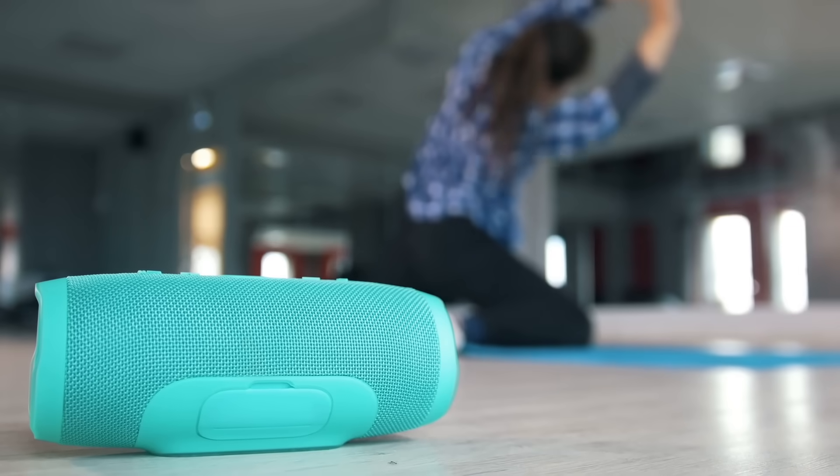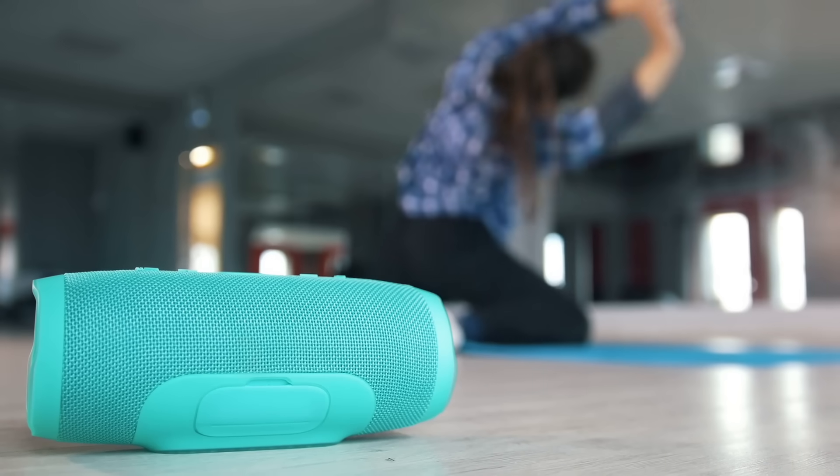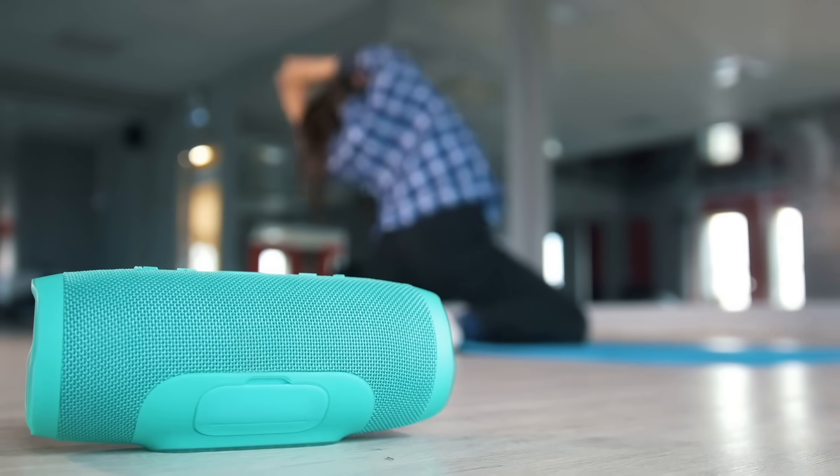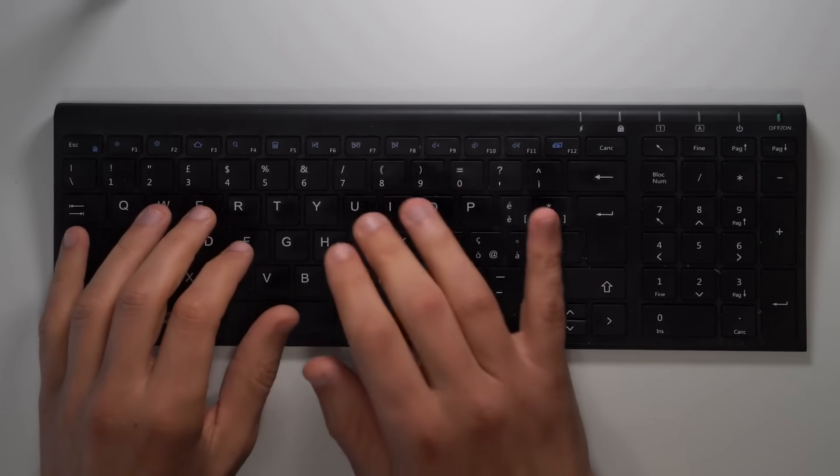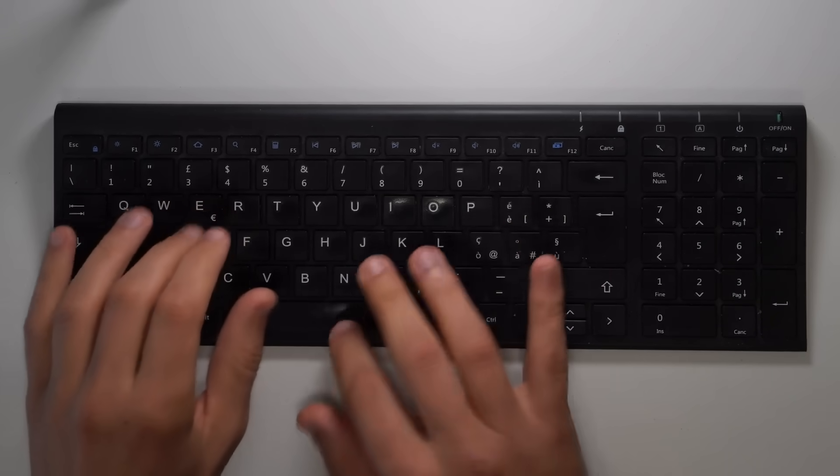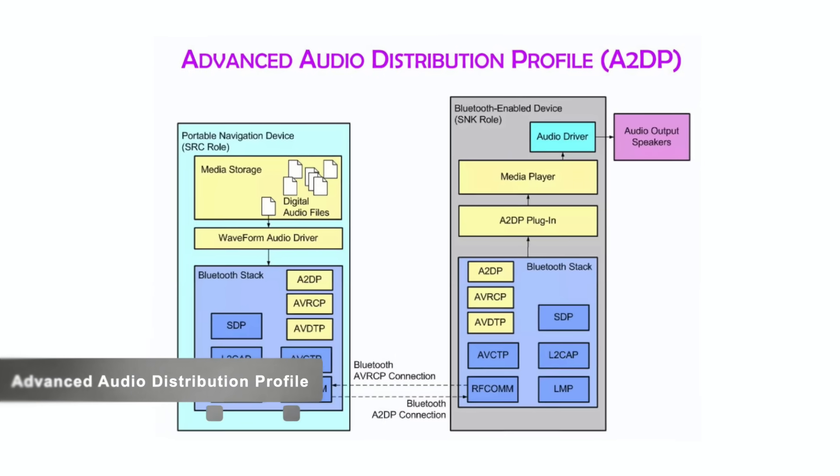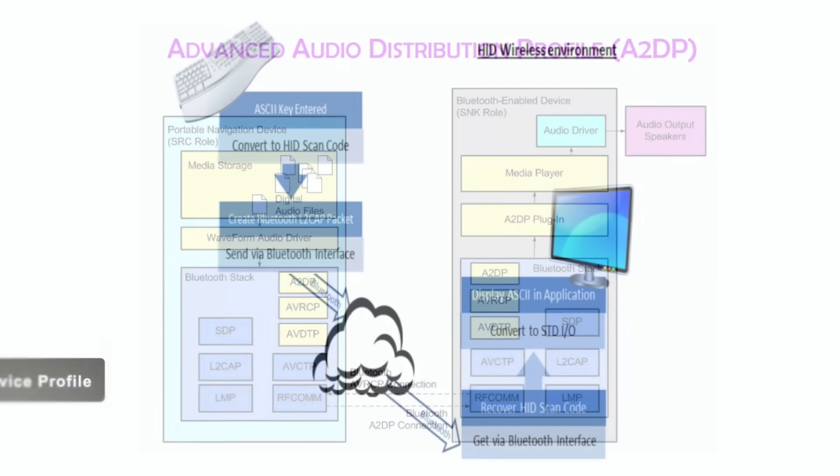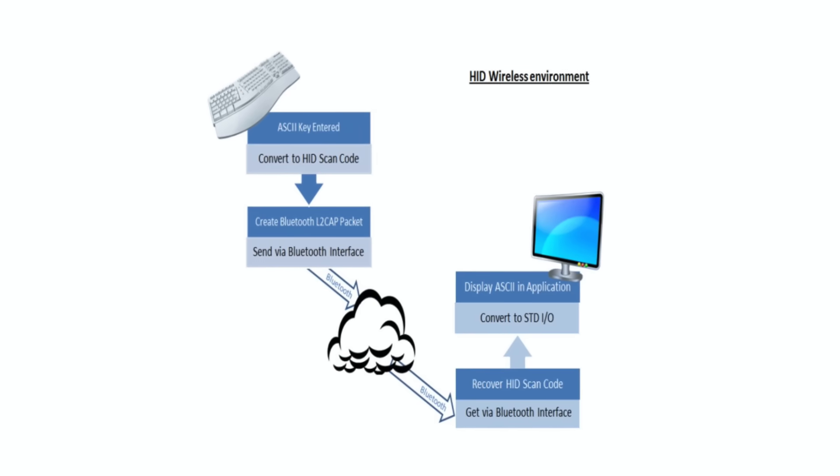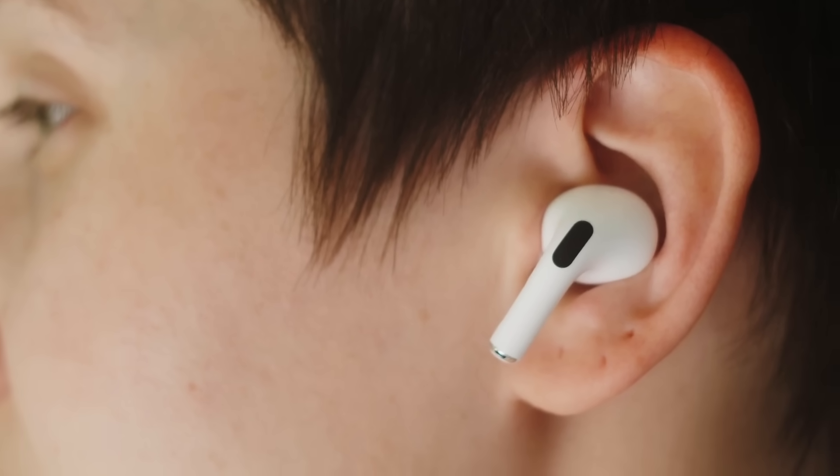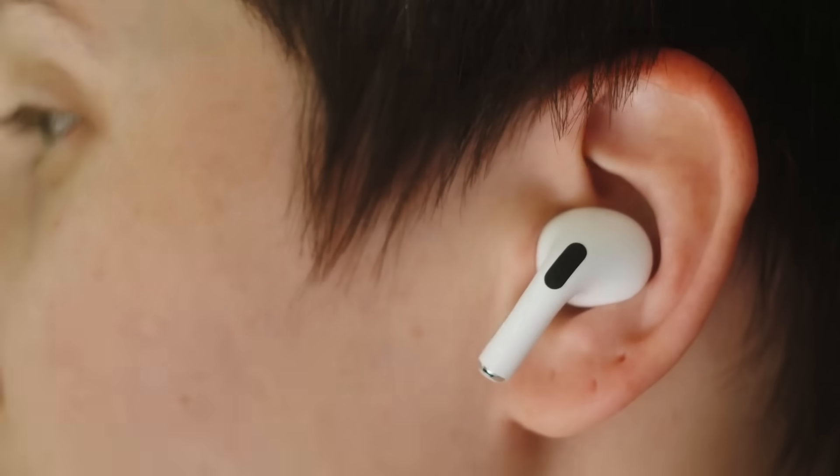Ever noticed how your Bluetooth speaker works differently from your wireless keyboard? That's because of Bluetooth profiles. These are predefined sets of rules that determine how devices interact. For example, the Advanced Audio Distribution profile is what makes streaming music possible, while the Human Interface Device Profile, HID, governs keyboards and mice. Each profile is tailored to specific functions, ensuring smooth communication between devices.